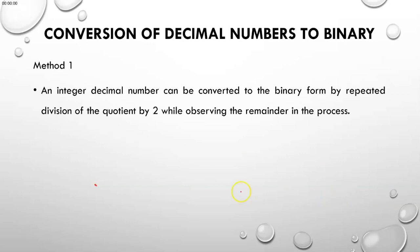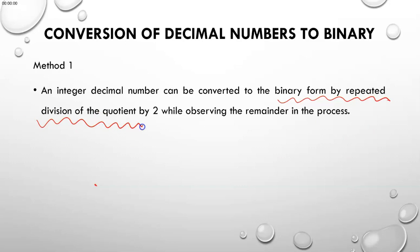In general, we have two methods. Method one is where an integer decimal is converted to binary form by repeated division of the quotient by two. We will look at an example of converting the number 21.